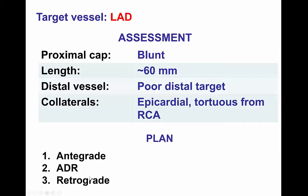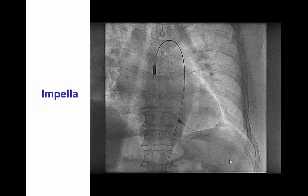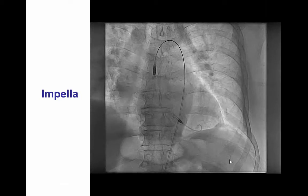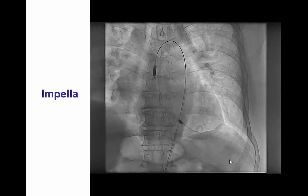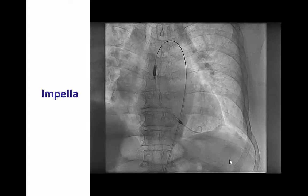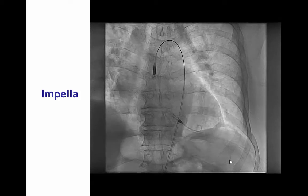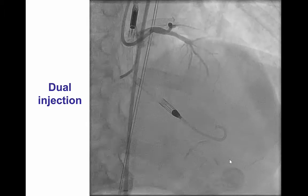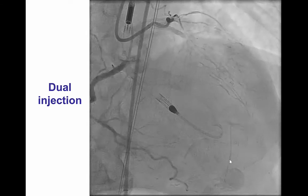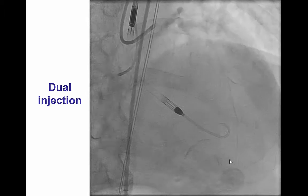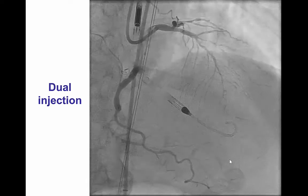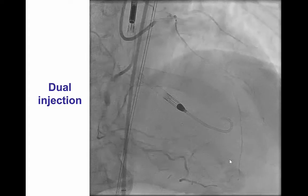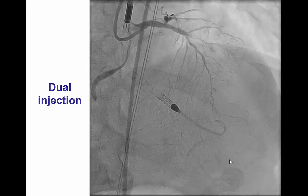The plan was to try antegrade crossing with retrograde only as a last option, given the complexity of the collateral, the small size, and the tortuosity. There was also discussion about using hemodynamic support given the patient's low ejection fraction. Since these were essentially his last patent coronary vessels, it was decided to use hemodynamic support, and an Impella CP device was inserted. The left main was engaged with an 8-French XB 3.5 guide using femoral approach, the Impella was through the left femoral, and a 6-French radial was inserted for imaging through the right coronary artery.